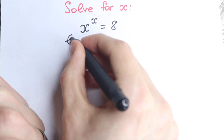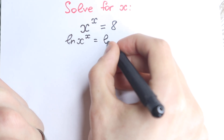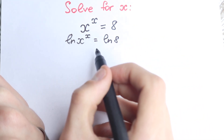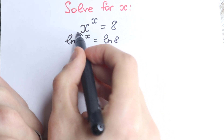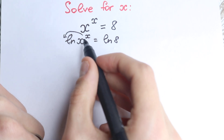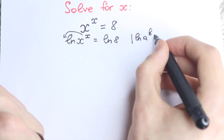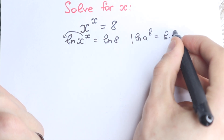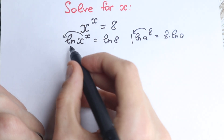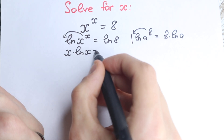So we apply natural log: ln(x^x) = ln(8). What I did is I applied natural log on both sides, and students ask me why. I do this because the x needs to jump down, using the main log property: ln(a^b) = b · ln(a). As a result we have x times ln(x) equal to ln(8).